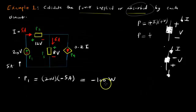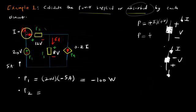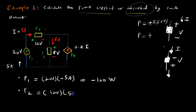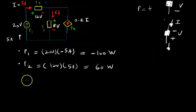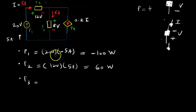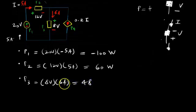Power 2 is across the next element. We see a 12-volt drop and 5 amps flowing through it, following passive sign convention, so it's a positive current and positive voltage: 12 volts times 5 amps equals 60 watts — this element is absorbing or dissipating 60 watts. Power 3 is across the next element: voltage drop is 8 volts and current flows from high to low, agreeing with passive sign convention — 8 volts times 6 amps equals 48 watts.